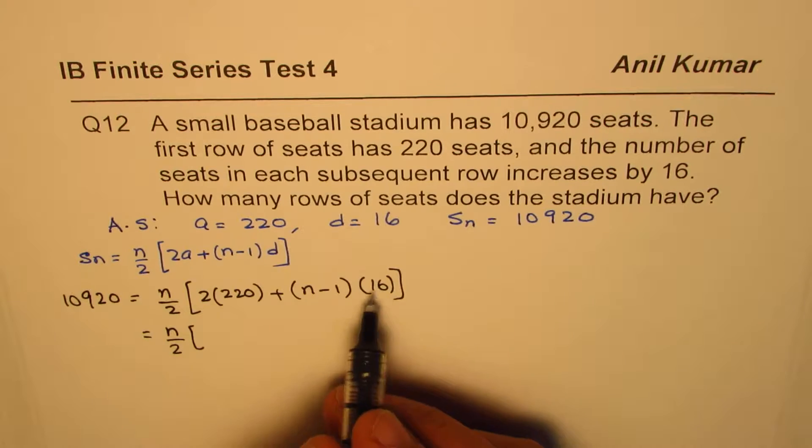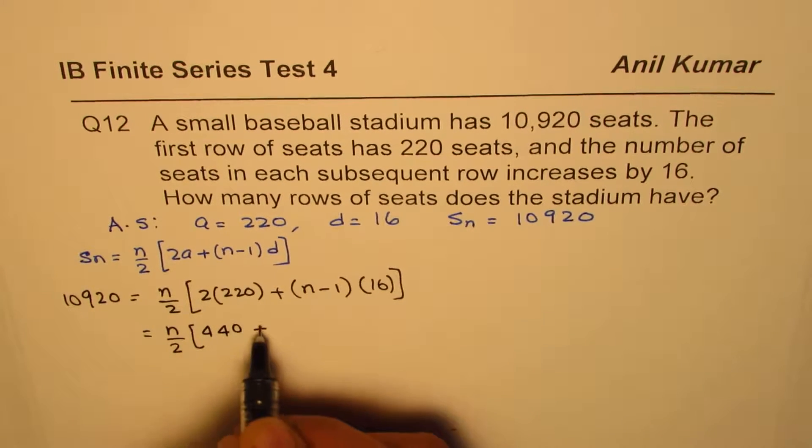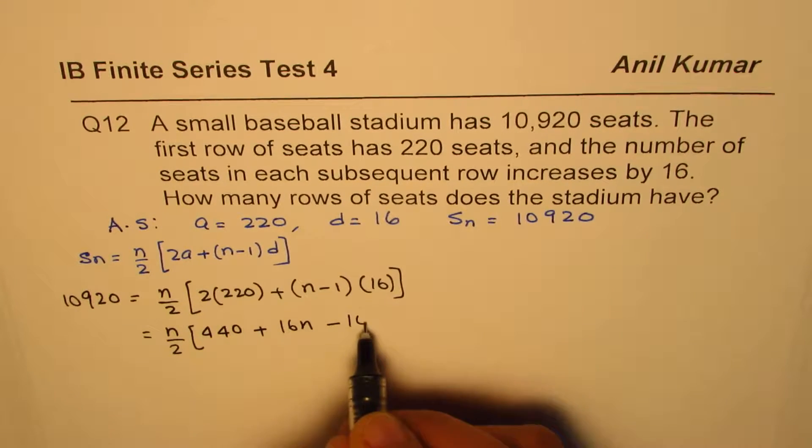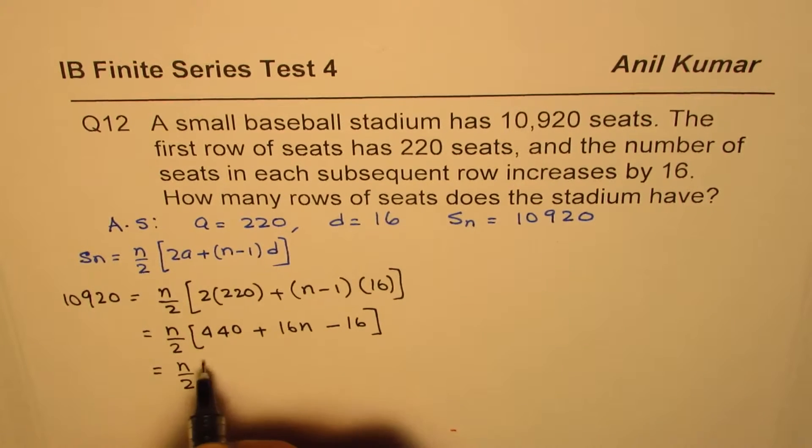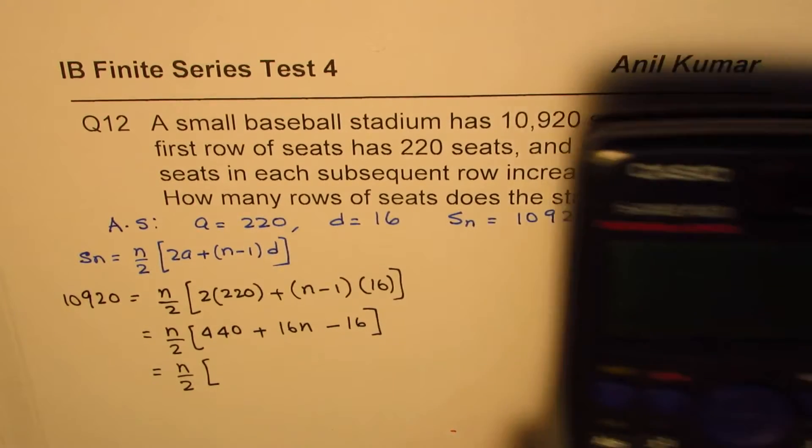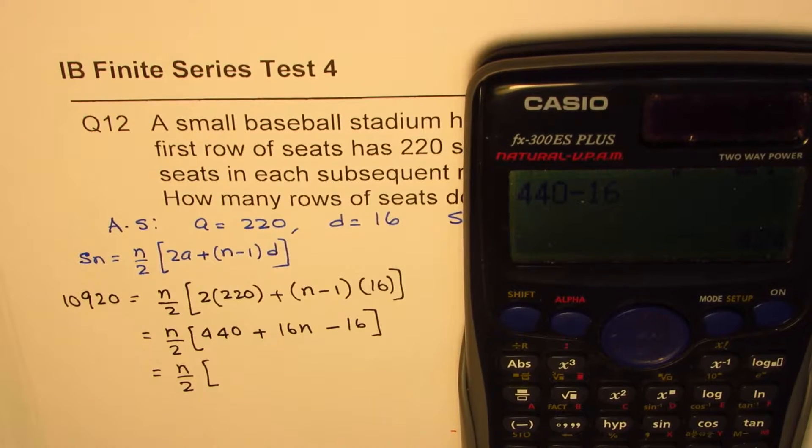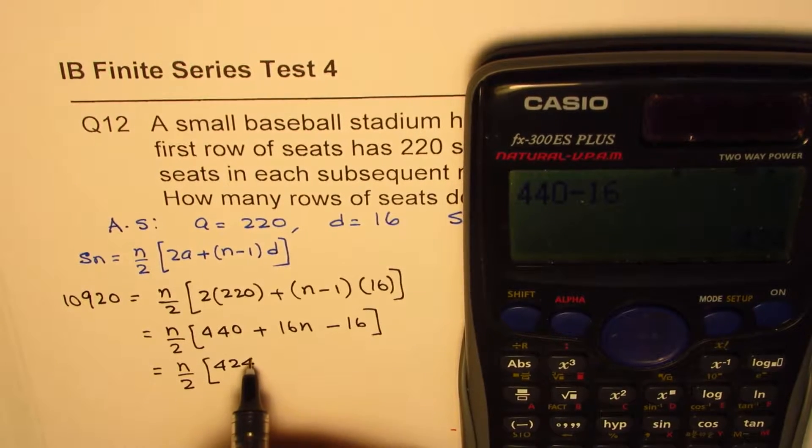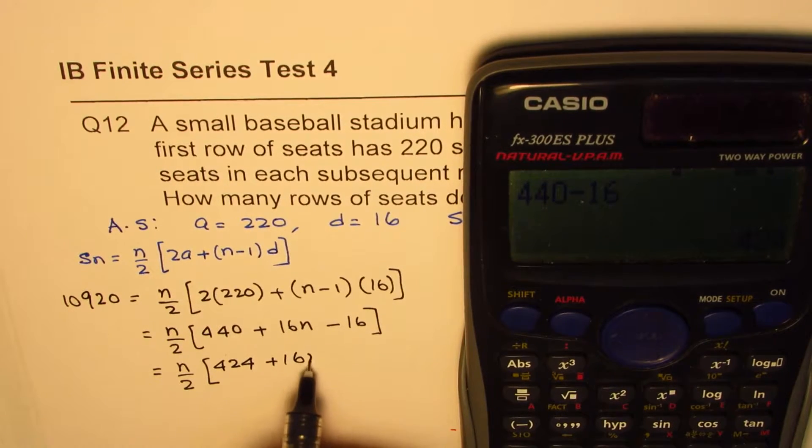Now we can actually simplify what is inside. So we'll write 440 plus open the bracket 16n minus 16. Now n divided by 2 is 440 minus 16. If the calculator is required no harm in using it. It is 424. So 424 plus 16n.